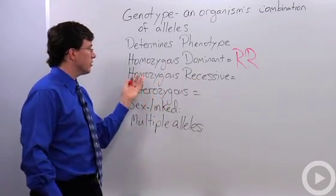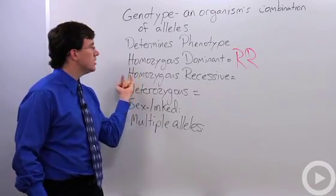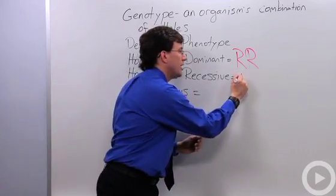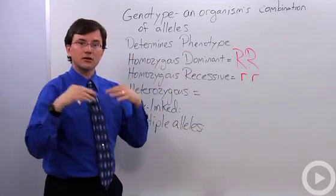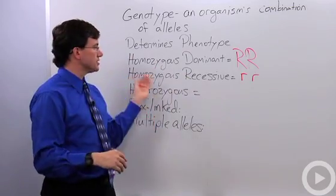Somebody who is homozygous recessive—again, homo means the same, so two of the same recessives—a non-roller would be little r little r. Their genotype would be homozygous recessive.